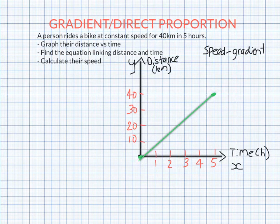Now, this time, we don't really need to put arrows and keep going forever, because we don't know if they kept cycling after 5 hours. So that is the graph that represents their journey of 40 kilometers in 5 hours. It's a straight line because the speed is constant. So that means our first part is done.